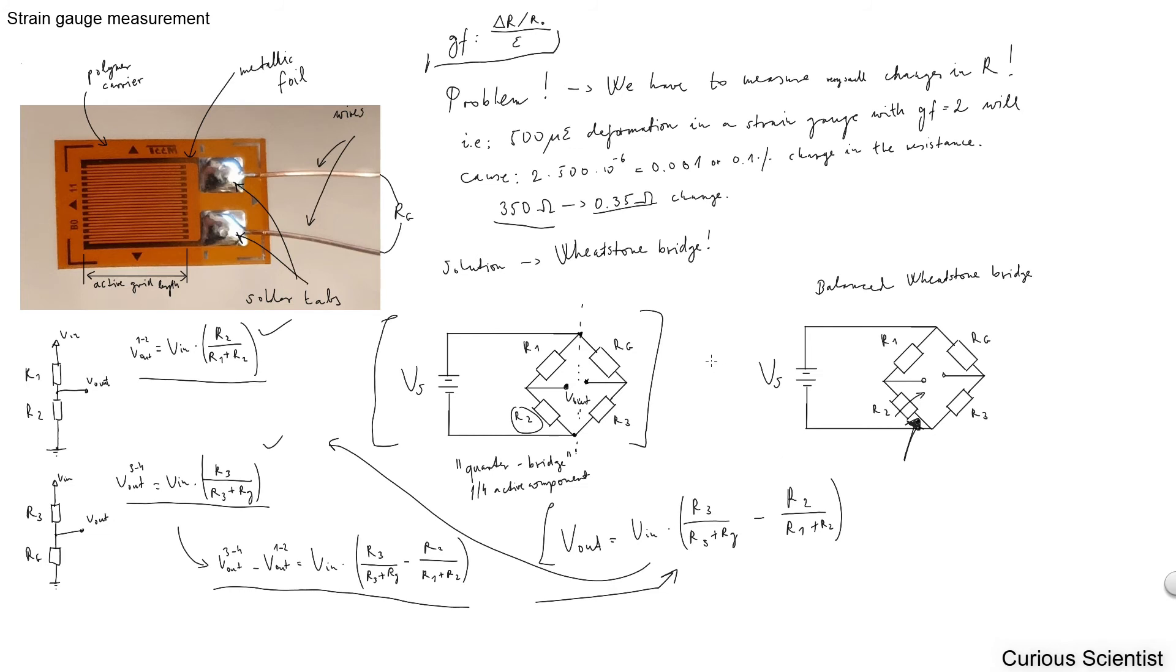The takeaway message is that basically we cannot measure small changes in the resistance. So instead of measuring the resistance, we measure voltages, because that's easier to measure in small scales, because we have operational amplifiers, high resolution AD converters, and so on. In order to be able to measure the change of the resistance as a change of voltage, we put our strain gauges into Wheatstone bridges.